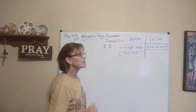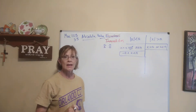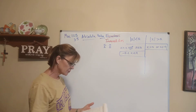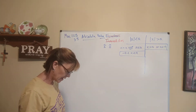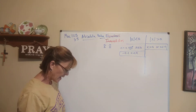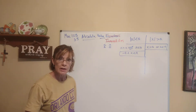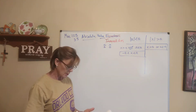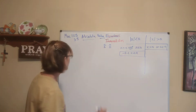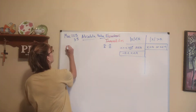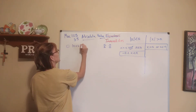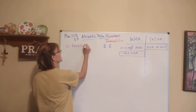We have to deal with the difference between 'and' and 'or.' For these exercises, we're supposed to solve these and write the solution in interval notation and then graph them. Here are a few examples. Number one: the absolute value of x plus 6 is less than 10.